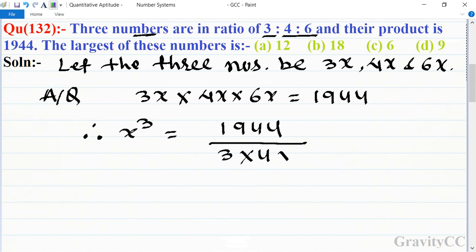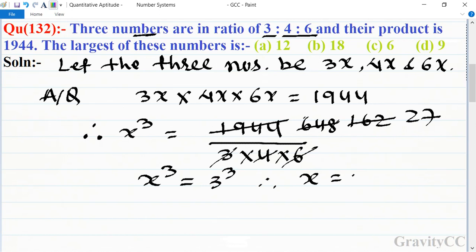So first we cancel by 3, then again cancel by table of 4, and cancel by 6. So x cubed is equal to 27, which is a cube of 3. So therefore x is equal to 3.